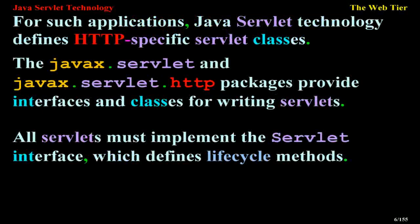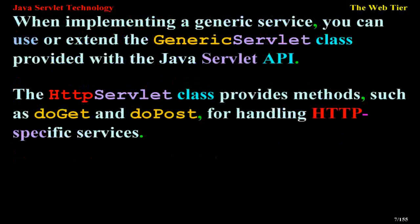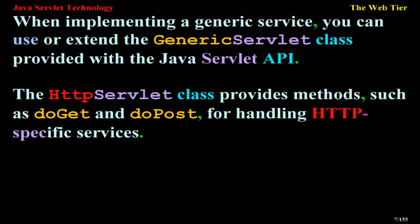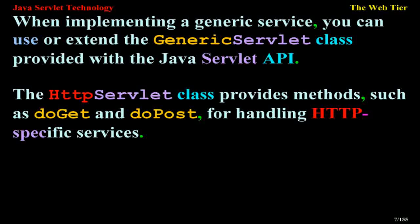All servlets must implement the servlet interface, which defines life cycle methods. When implementing a generic service, you can use or extend the generic servlet class provided with the Java servlet API. The HTTP servlet class provides methods, such as doGet and doPost, for handling HTTP-specific services.